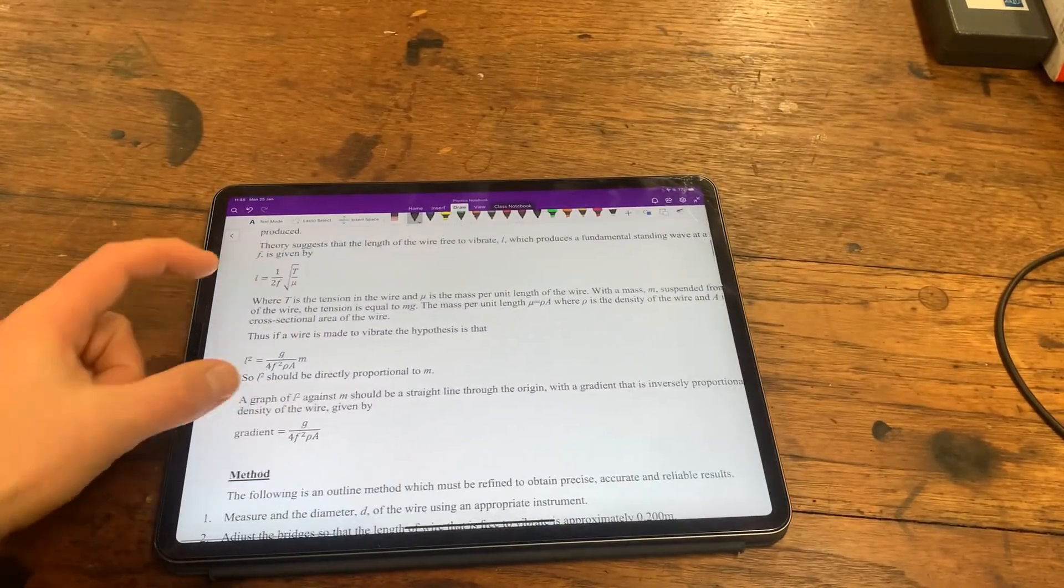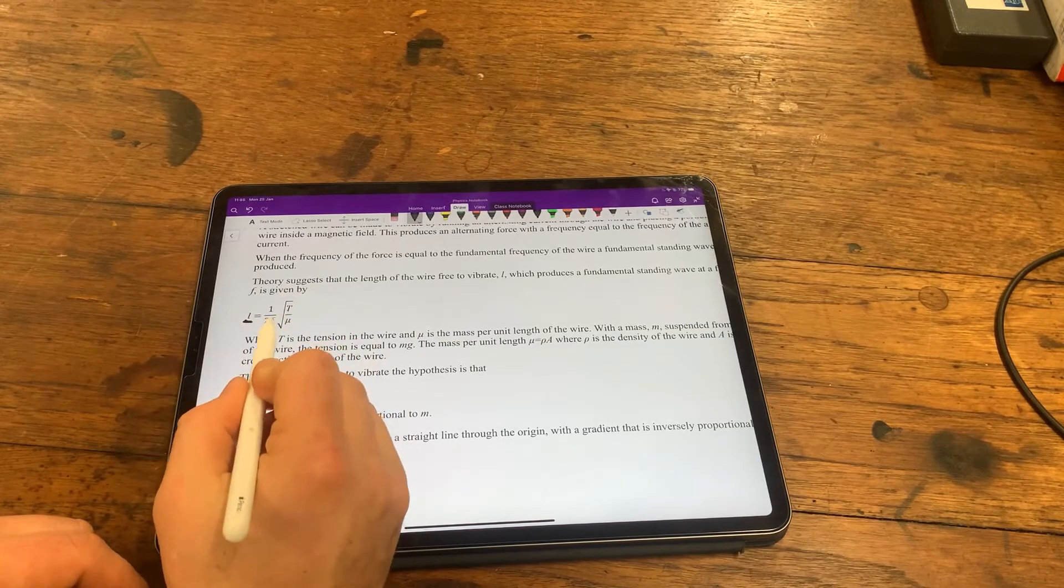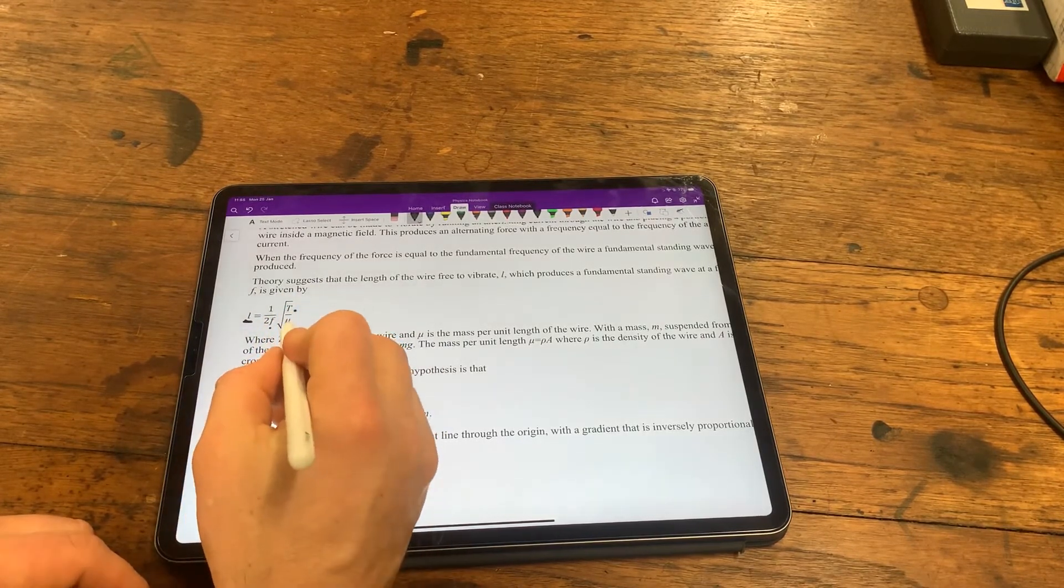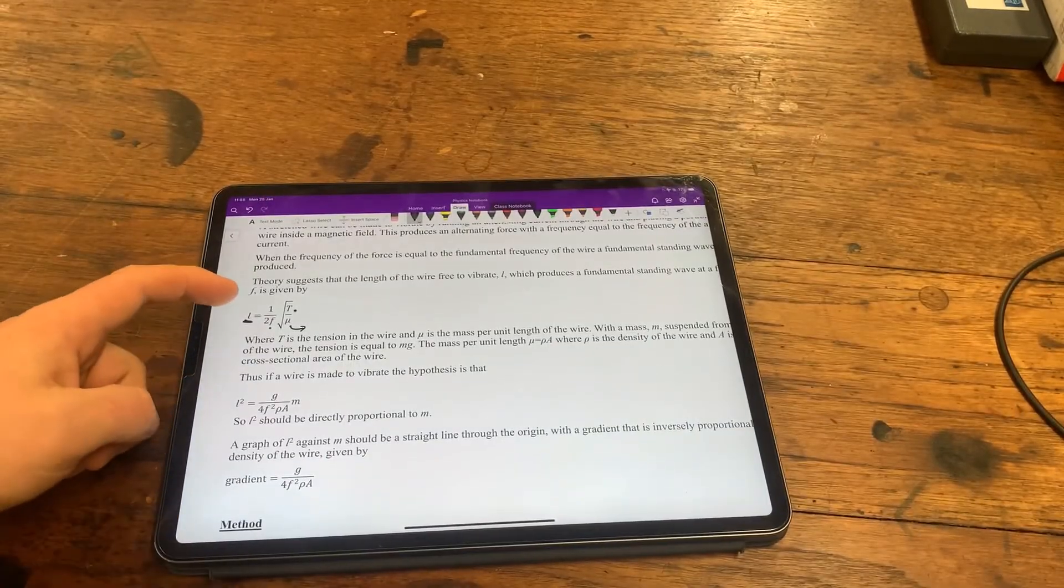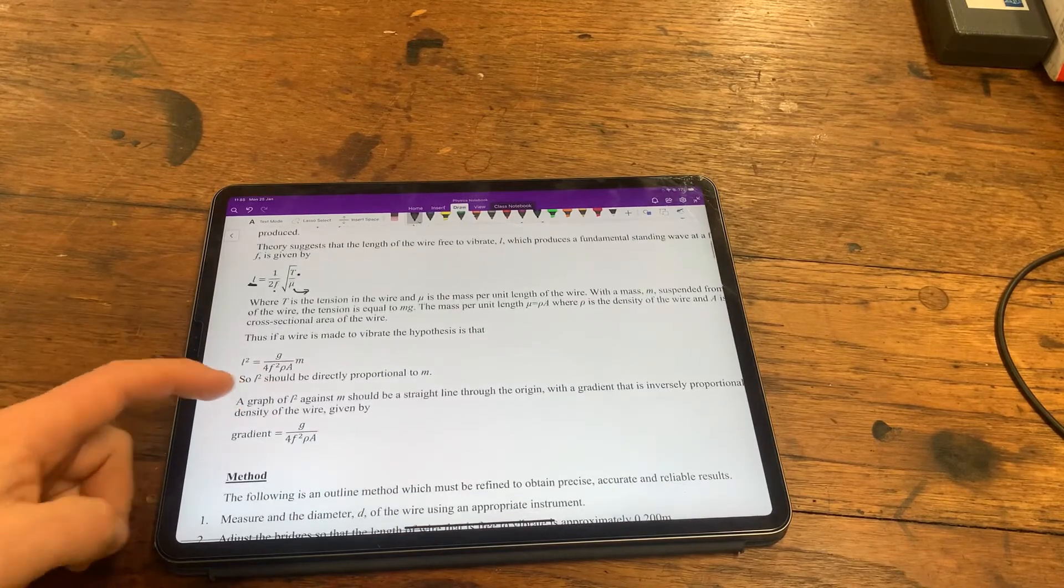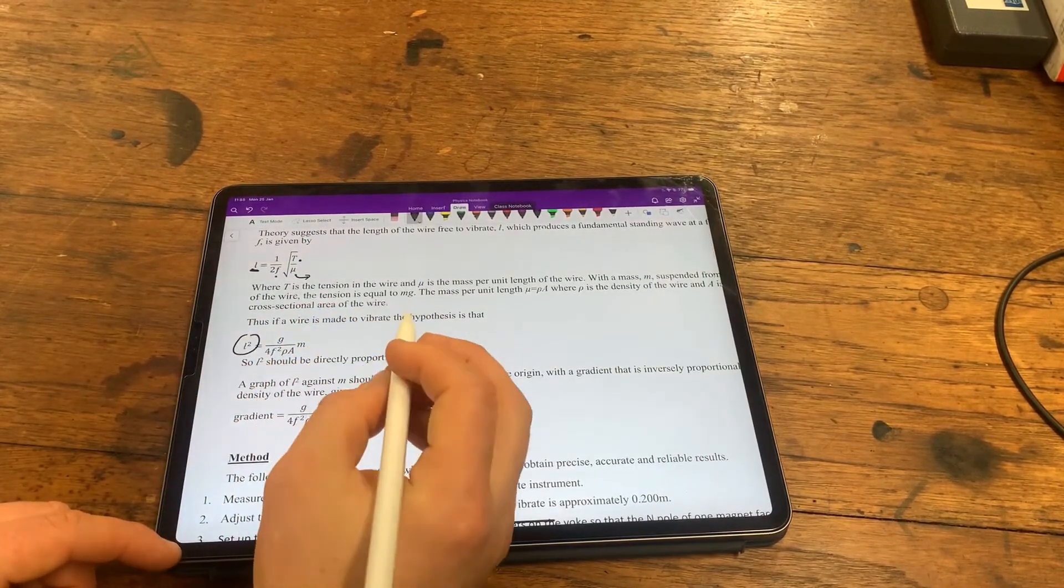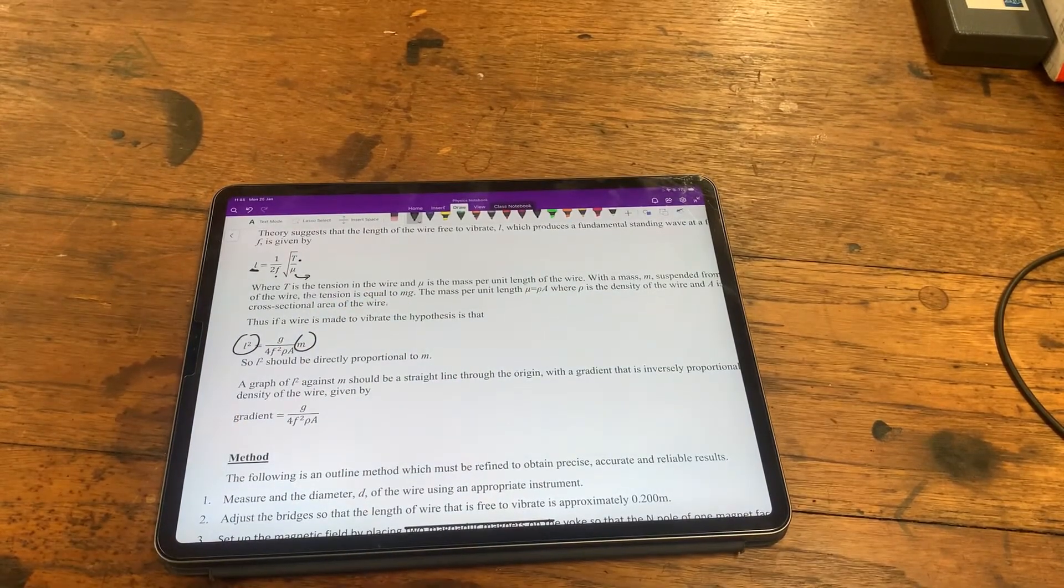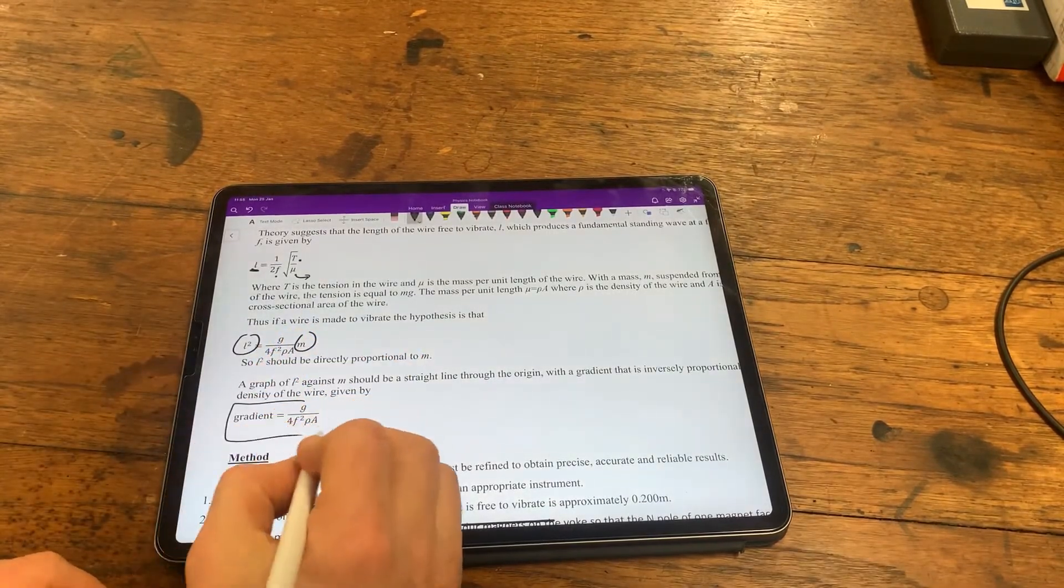You'll notice that there's some theory here. The theory suggests that the length of the wire is related to the frequency, the tension, and the mu is the mass per unit length of the wire by this equation. So if you follow this through, and I'm not going to do the whole thing, we can see that if we plot the length squared against m, the mass added to the end of the wire, we should get a straight line with a gradient which is given by this.